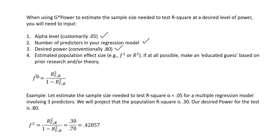The effect size used in G-Power to estimate our sample size is F-squared. For a multiple regression analysis we can calculate F-squared as a ratio of the R-square value to 1 minus the R-square value for our model — what Cohen describes as a signal-to-noise ratio. We can enter the F-squared value directly into G-Power, or we can estimate it using our projected R-square value.